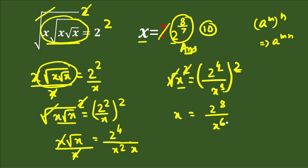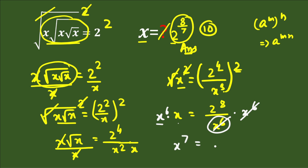To remove x to the power of 6 from the denominator, we multiply both sides by x to the power of 6. On the right-hand side x^6 cancels. On the left-hand side, x times x^6 gives x to the power of 7. So we have x to the power of 7 equals 2 to the power of 8.